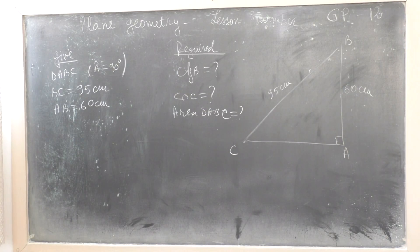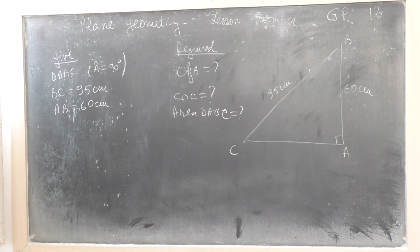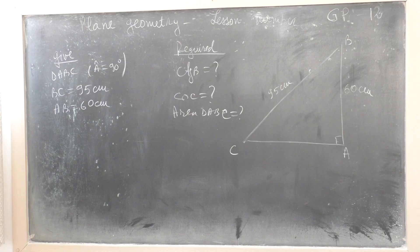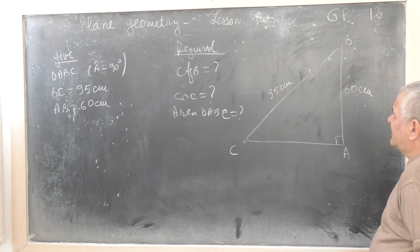Triangle ABC right angle at A. Angle A equal to 90 degrees. BC hypotenuse equal to 95 cm. Catheter AB equal to 60 cm.